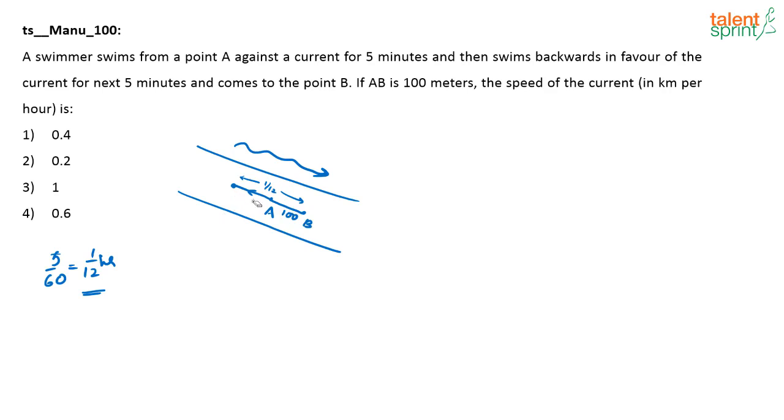So I can say that for the first 5 minutes, this person is traveling X meters upwards. Then for the next 5 minutes, he is traveling X plus 100 meters downwards. Is that correct? So what is the person doing?